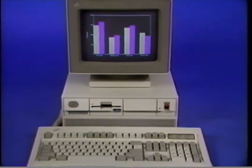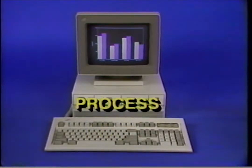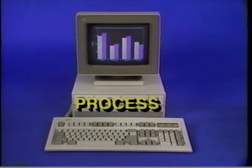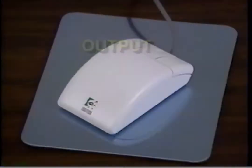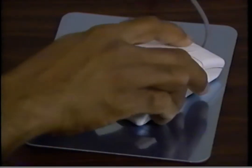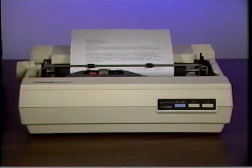Let's look at how input, process, and output all work together in a simple computer setup. This simple setup has three main parts: a keyboard, where you input information by typing; the CPU or central processing unit, the center of processing activity where information is changed, rearranged, or calculated; and the monitor or screen, which outputs or displays the information. There are many other input devices such as a mouse or scanner, and output devices such as a printer.